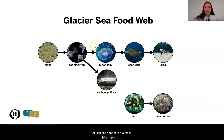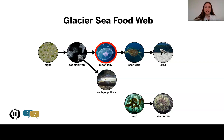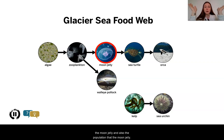We can see right here our moon jelly population — this is the thing that we are trying to understand more about. We know that we need to look more into the births and deaths that these moon jellies are having, and something that might help us do that is by understanding what is going on in the population that eats the moon jelly and also the population that the moon jelly eats.